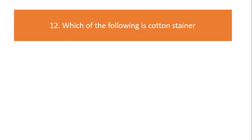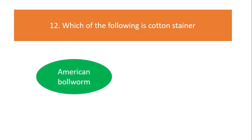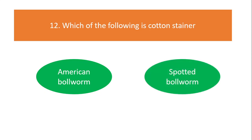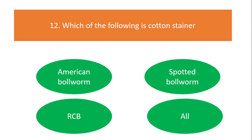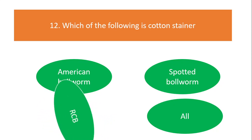Which of the following is a cotton stainer? American bollworm, spotted bollworm, red cotton bug, or all of the above? The answer is red cotton bug (RCB).